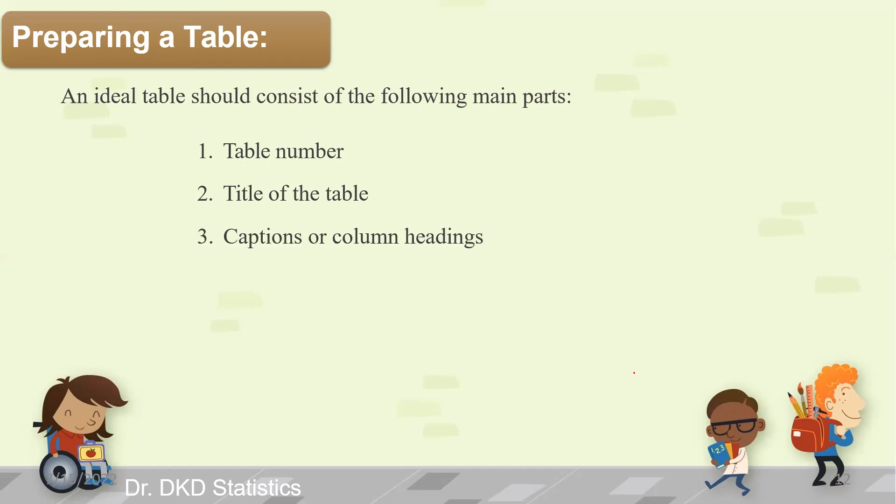Captions or column headings should be clear in the table, and row designations - we need to understand which variable should come in rows and which should come in columns. Next point: the body of the tables. What should we put in the table body? We have to be very clear. And one important point: footnotes. If we are writing any abbreviations, we should write them below the table as footnotes.